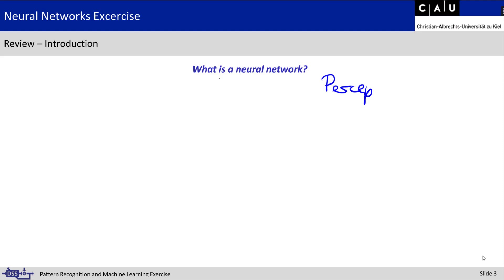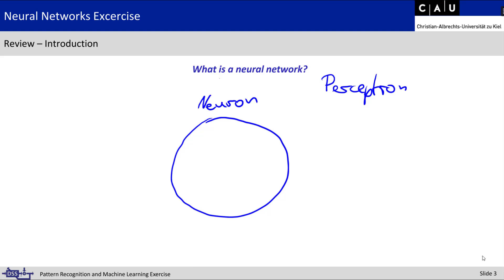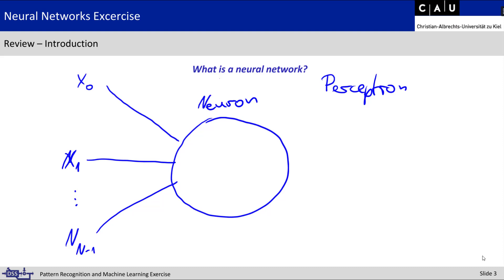If we want to mimic those connections, we have the model of a perceptron. A perceptron is a model of a neuron represented as a big circle. This neuron has many inputs — for example x0, x1, up to xn-1. Each of those inputs has a special weighting, for example w0, w1, up to wn-1, and those feed into our neuron.